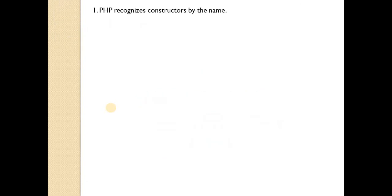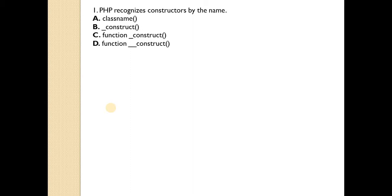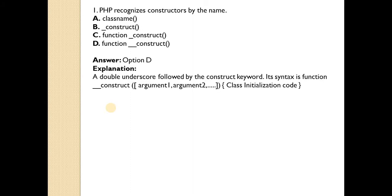First question: PHP recognizes constructors by the name. Answer is option D. The syntax of a constructor is the function keyword followed by double underscore construct, then arguments and class code.